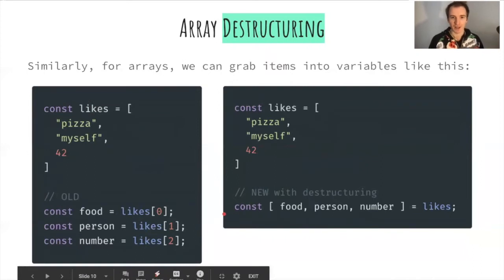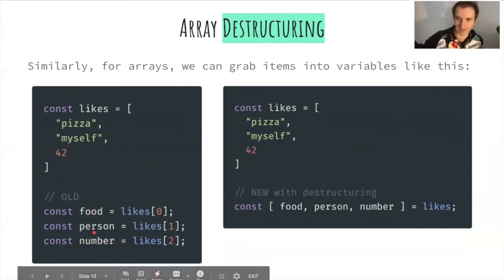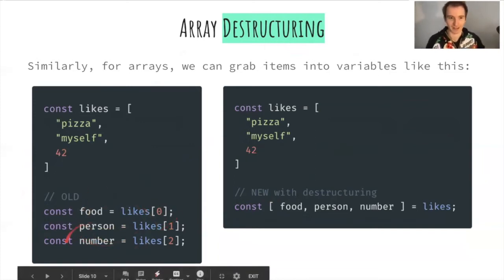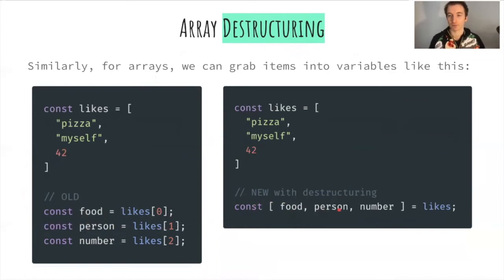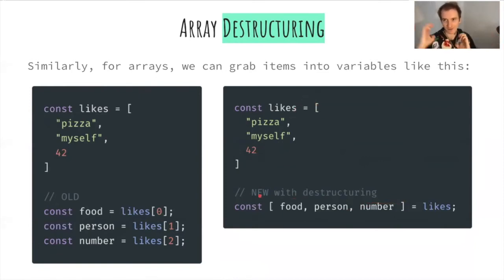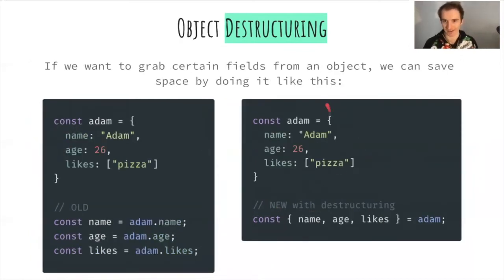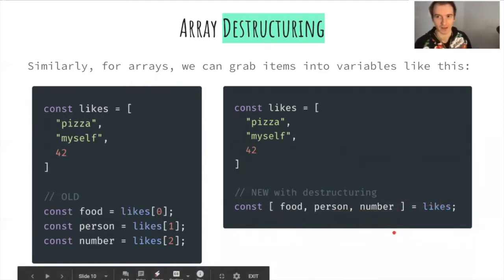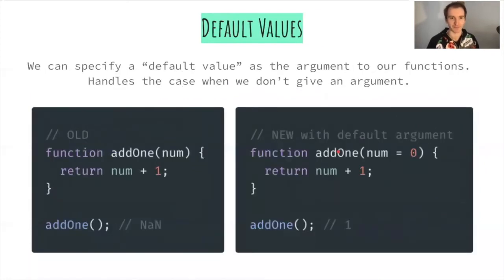Array destructuring works the same way. Instead of multiple lines grabbing individual indexes, you use square bracket notation — since arrays syntactically involve square brackets — to extract the first, second, and third items in one line. Don't worry about memorizing the syntax; just look it up when you need it.